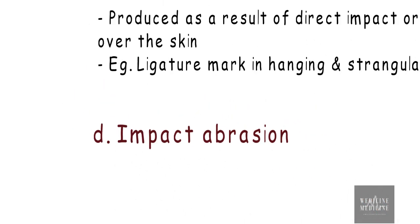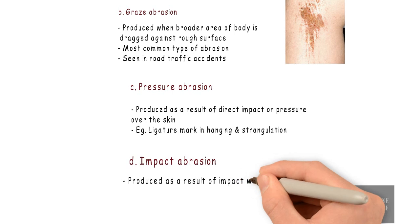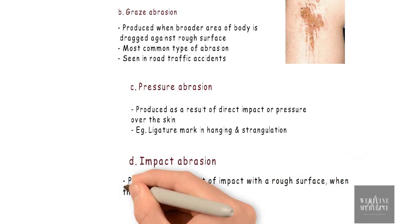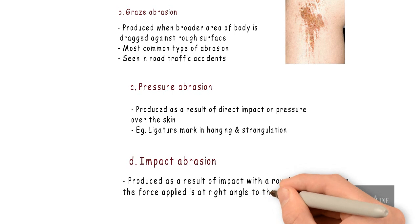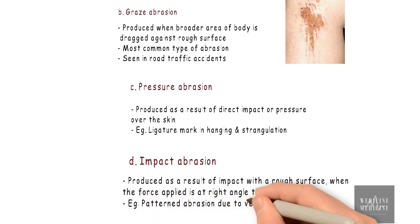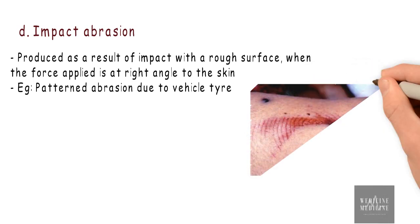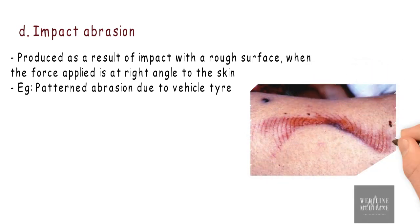Impact abrasion is produced as a result of impact with a rough surface — that is, when force is applied at a right angle to the skin. An example is patterned abrasion due to a vehicle tire. In case of impact abrasion, the forcible impact damages the dermis and is presented with an underlying bruise.